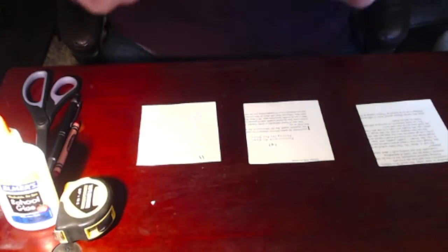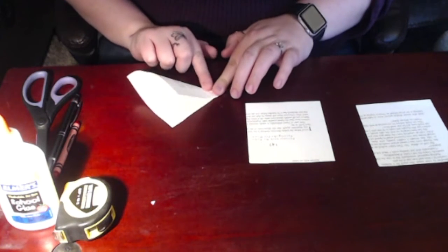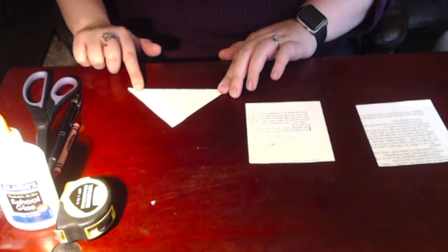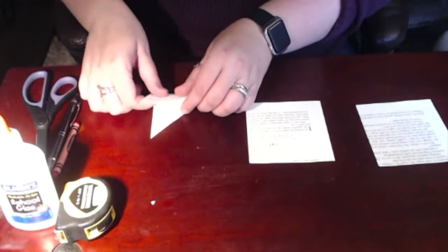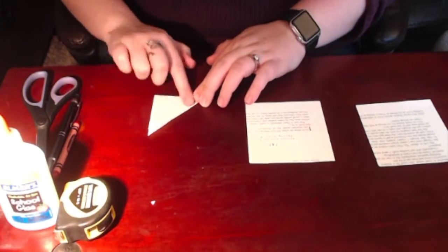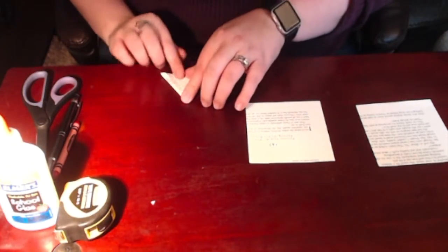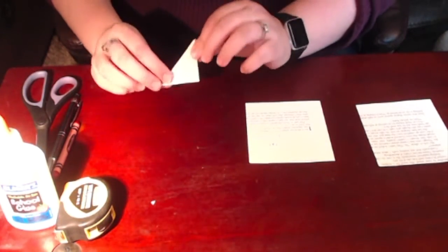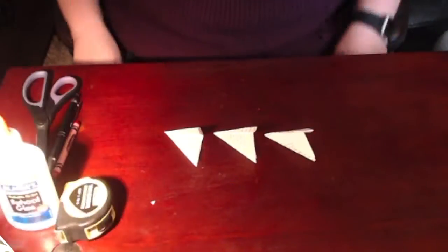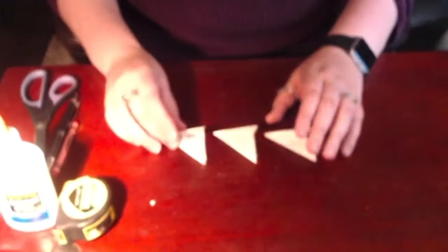Once you have three squares, you're going to go ahead and start folding. Each square will be folded into a triangle in half three times. So one, two, and three. This is where if you have any overage, you can cut the top a little bit to make it perfectly even. And repeat on your other two squares until you have three nice little triangles. They may open a little bit—that's okay.